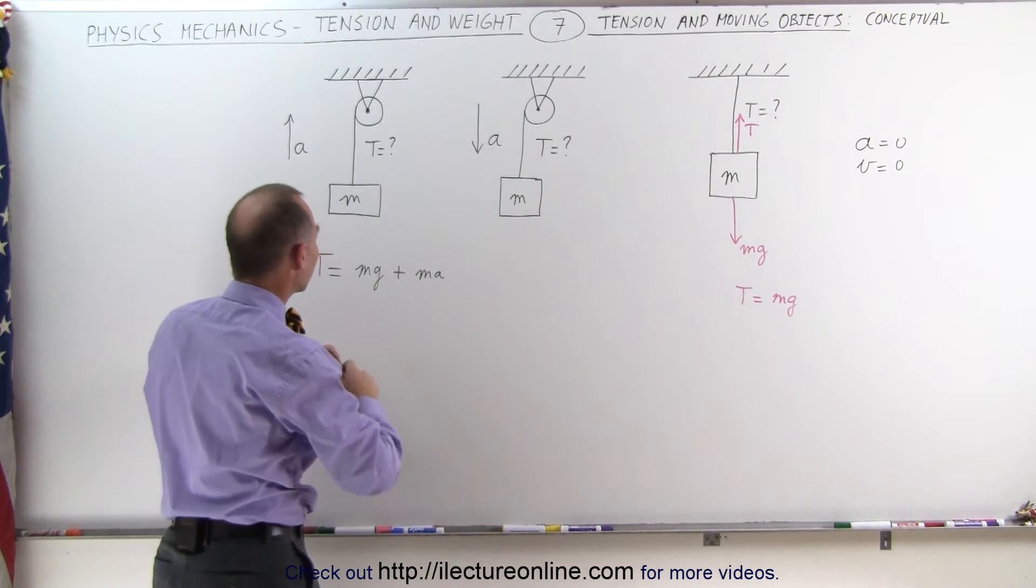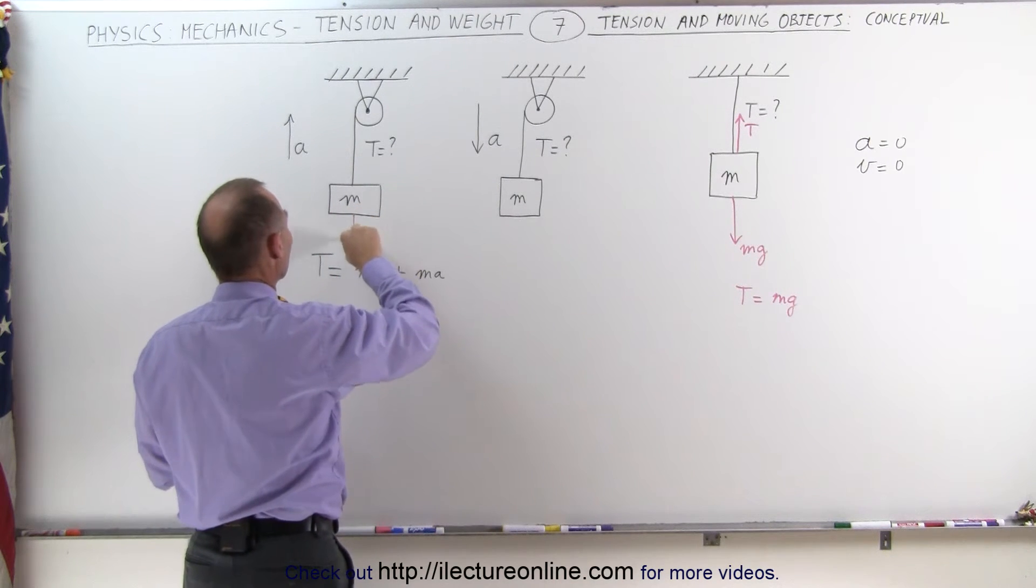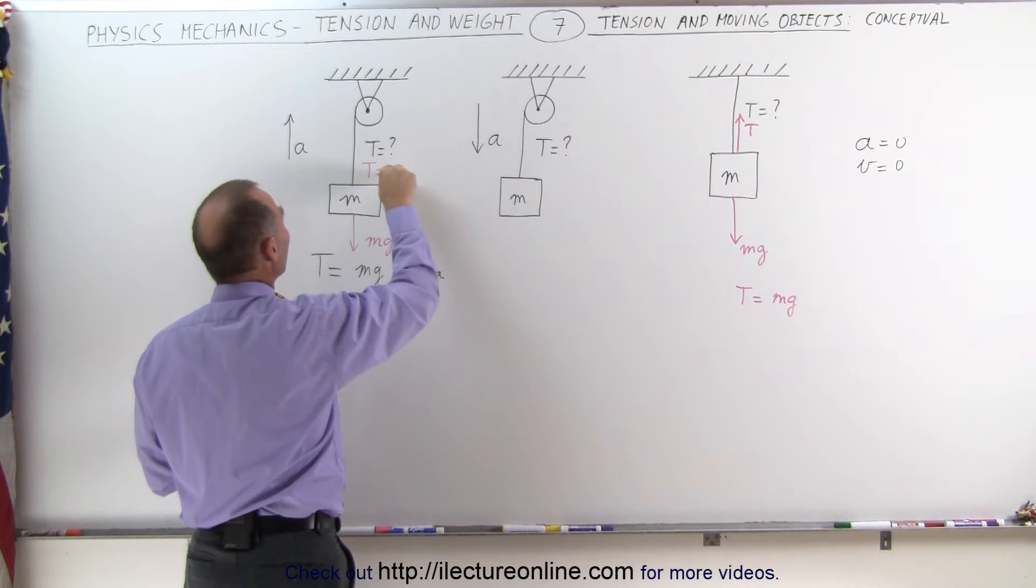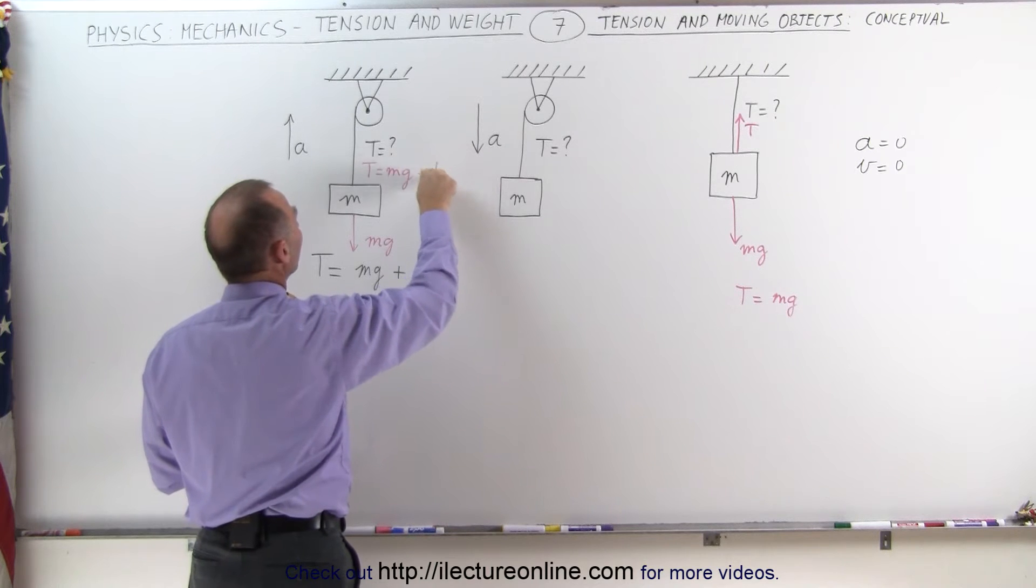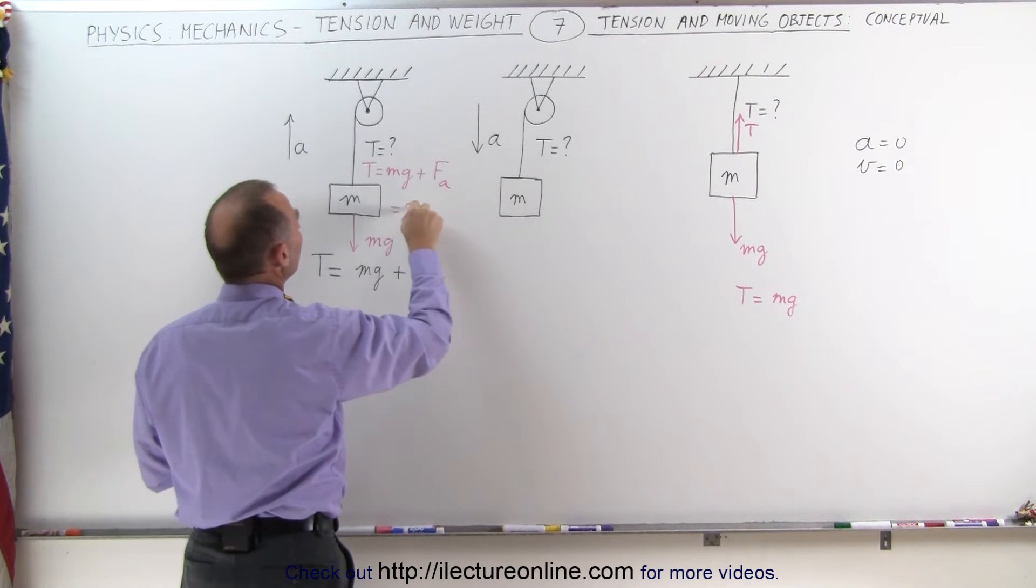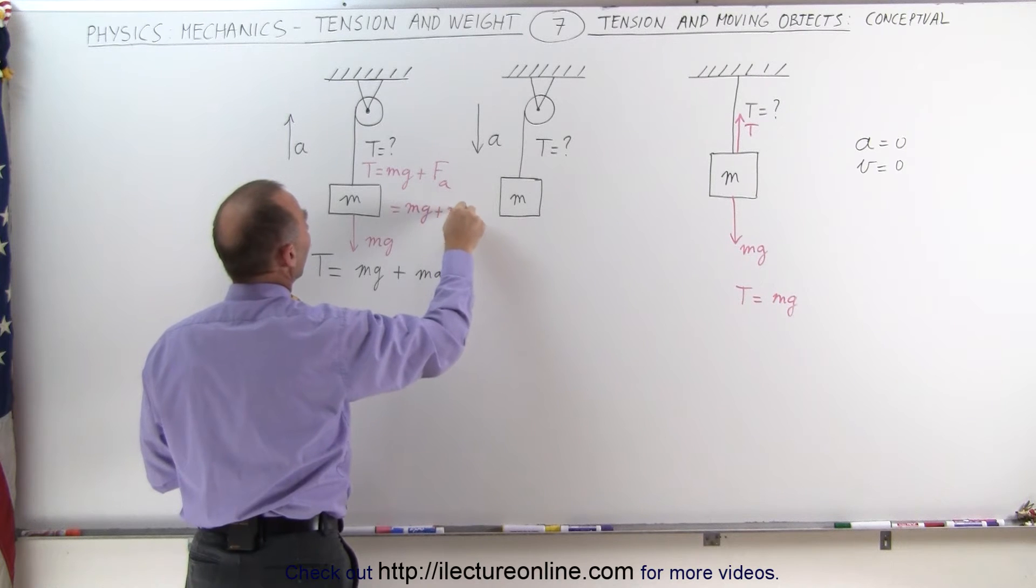So graphically, the way we can look at it is we have the weight of the object, which is MG, and here we have the tension which is equal to MG plus the force required to accelerate it. So in this case, that would be MG plus MA.